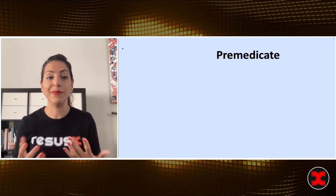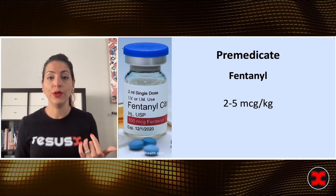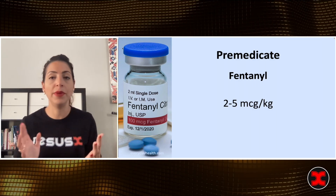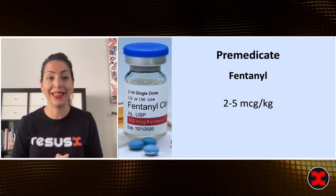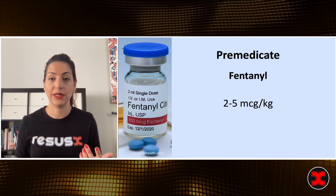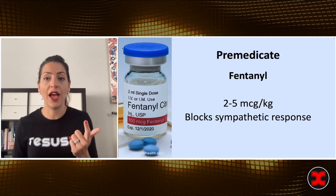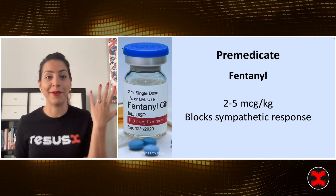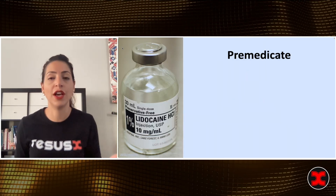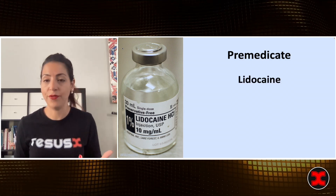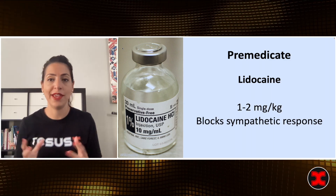The next thing is pre-medication. One of my favorites is fentanyl. Fentanyl can be used at two to five micrograms per kilo — so for a 75 kilo person, that's 150 to almost 400 micrograms, which is a lot more than we usually think of when intubating patients. The reason we use this large dose is that it blocks the sympathetic response — it blocks the tachycardia and the hypertension that happen when we irritate the airway with a laryngoscope, and that is what we want.